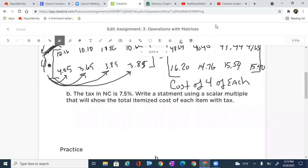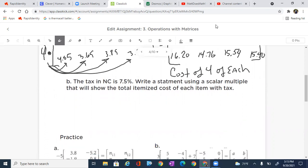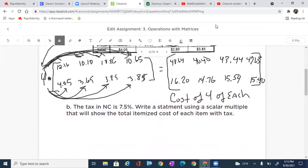We can then go ahead and even stretch it out a little bit more. It says the tax in NC is 7.5%. Write a statement using a scalar multiple that will show the itemized cost of each of the items.